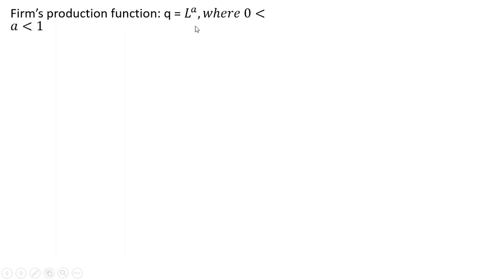Q equals L raised to the power of A. Q is a quantity of output. L is the labor input. And we'll note here A is going to be greater than 0 but less than 1.